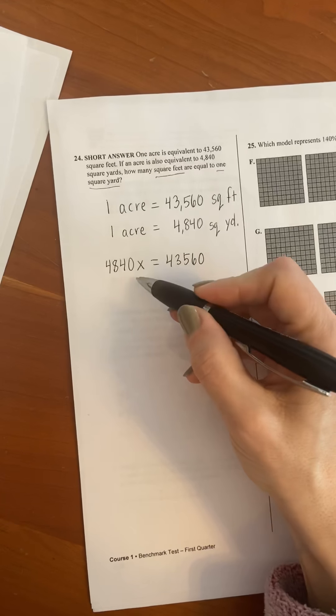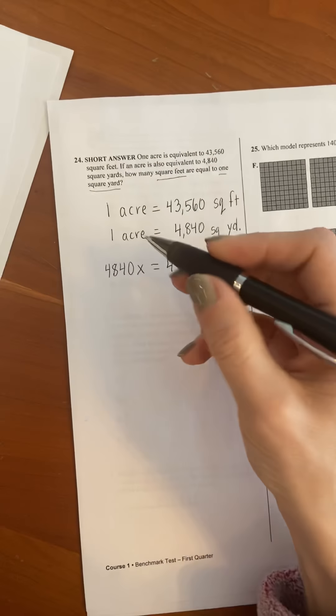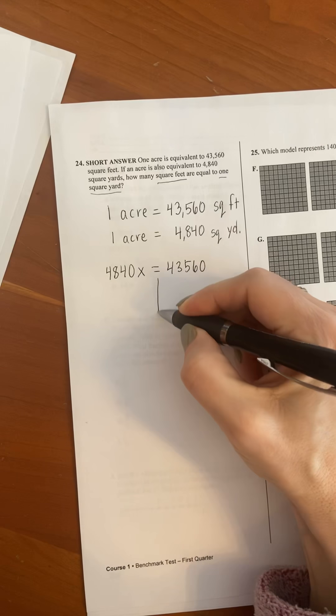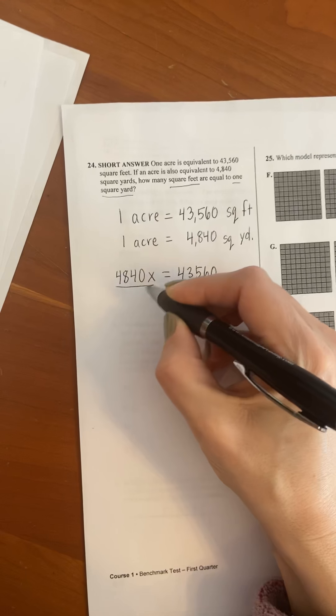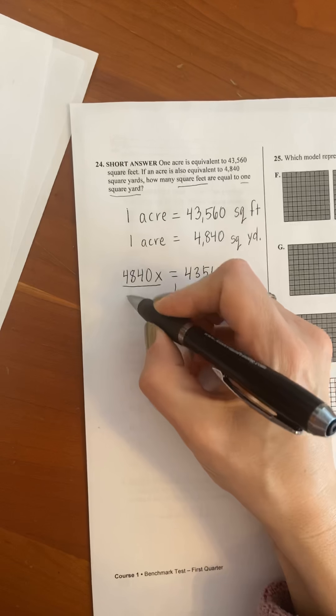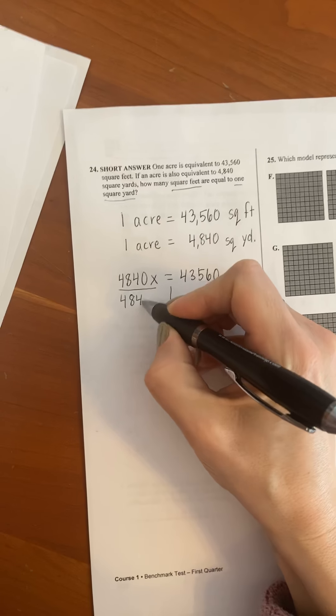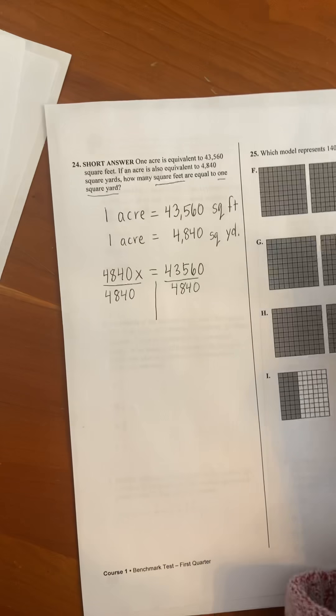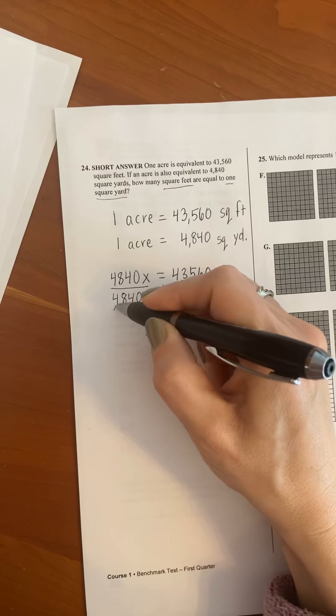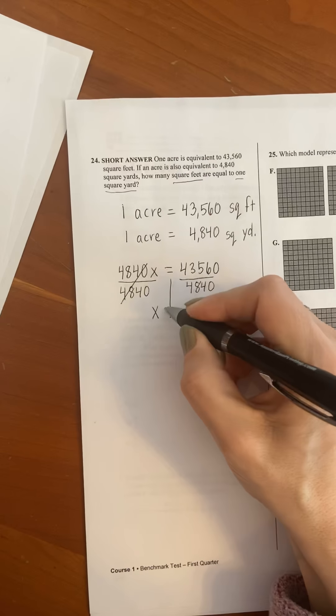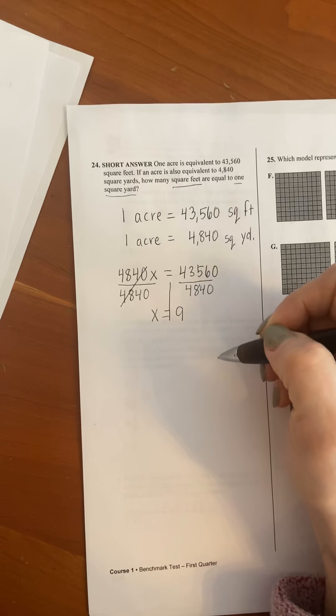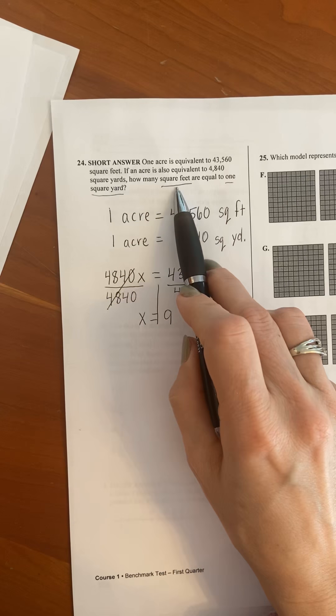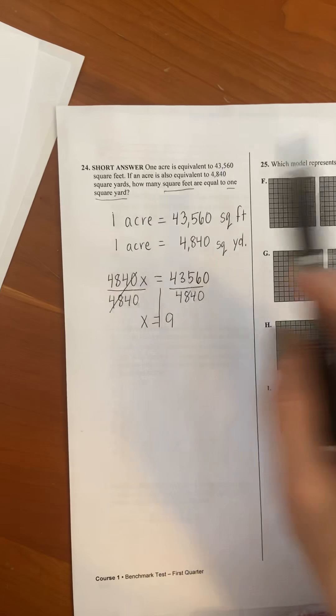And the way that we solve this, this is now an algebra equation so this is telling you to multiply. So you split your equation, do the inverse operation so the opposite or the inverse of multiplication is division. So you divide both sides by 4,840 and again just use a calculator for this. These two cancel and you end up with x equals nine.